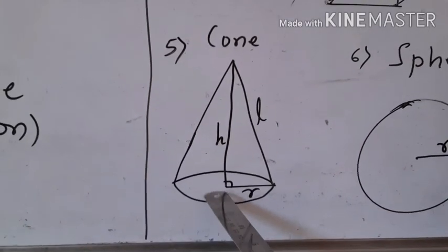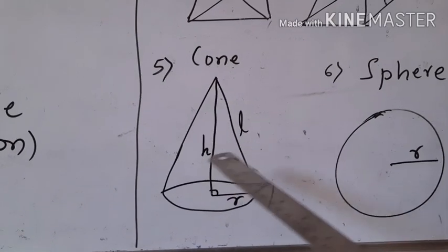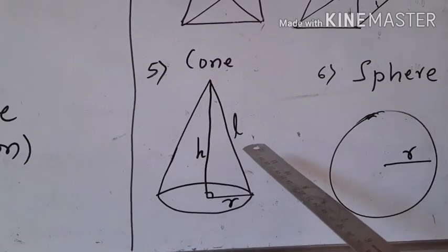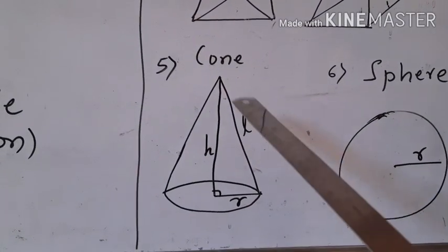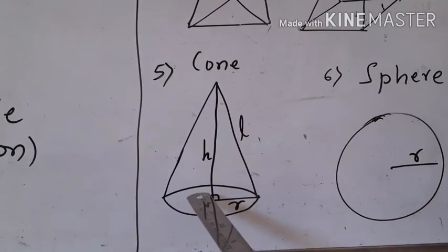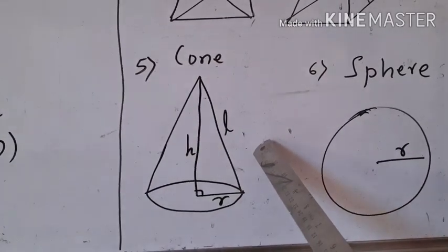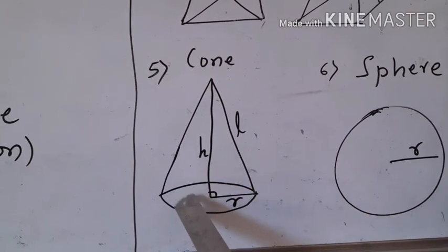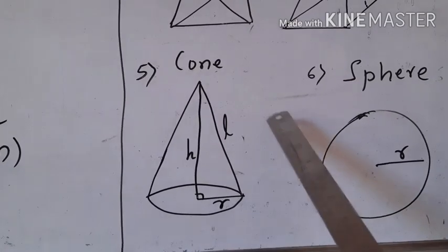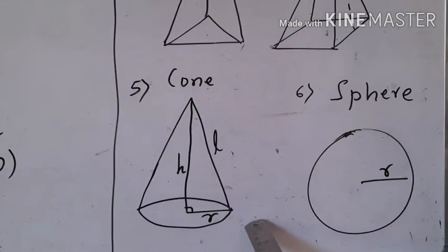Next comes cone. Cone has one circular bottom and its lateral surface is curved — that is why it is called a curved object. Here, R is the bottom radius, H is the perpendicular height, and L is the slant height. Thus a cone will have slant height, a perpendicular height, and a bottom radius. L, H, and R all three form a right-angled triangle.